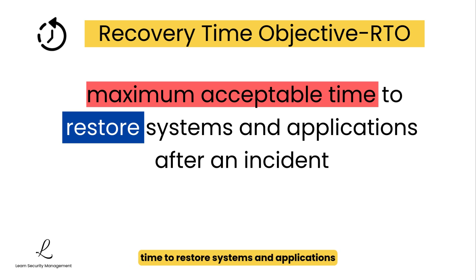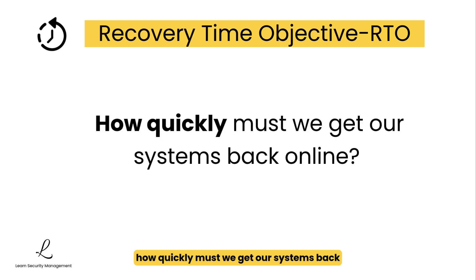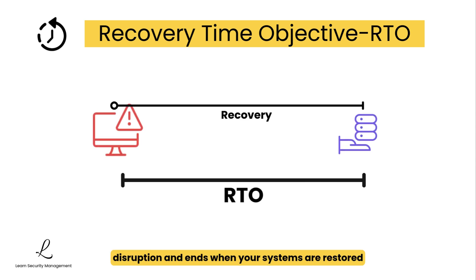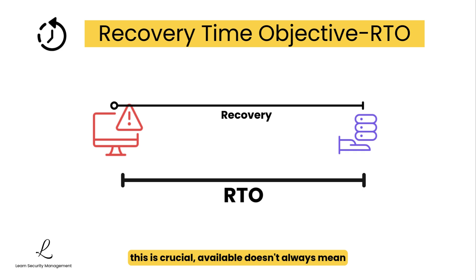RTO is the maximum acceptable time to restore systems and applications after an incident. It answers the question: how quickly must we get our systems back online? RTO starts at the moment of disruption and ends when your systems are restored and available. However, and this is crucial, available doesn't always mean fully operational.